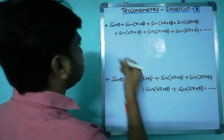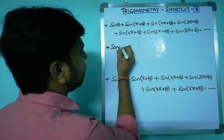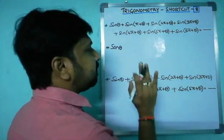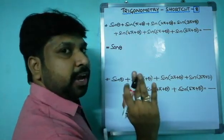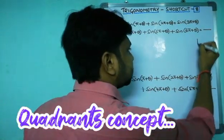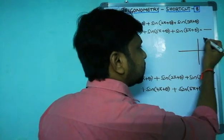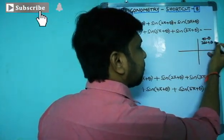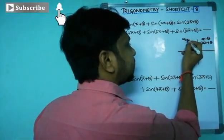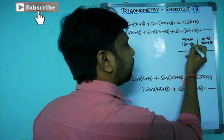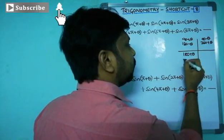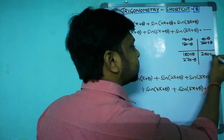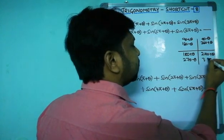Look carefully. According to the quadrants concept, first let us write down: first quadrant contains 90 minus theta, 360 plus theta; second quadrant is 90 plus theta, 180 minus theta; third quadrant is 180 plus theta, 270 minus theta; and fourth quadrant is 270 plus theta and 360 minus theta.